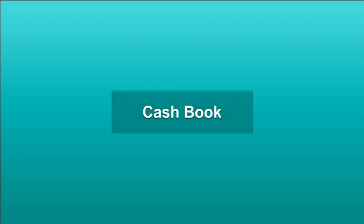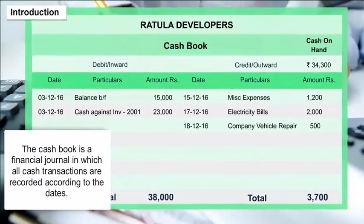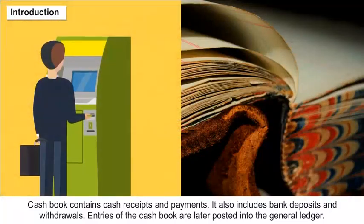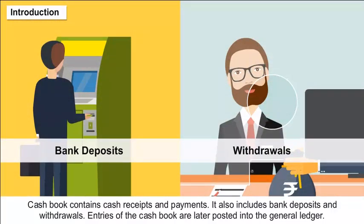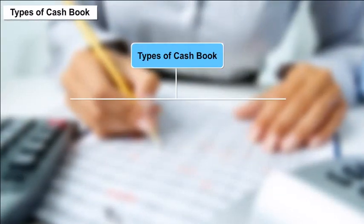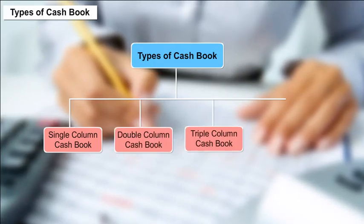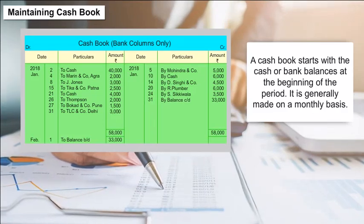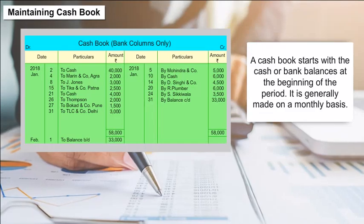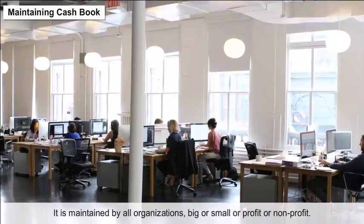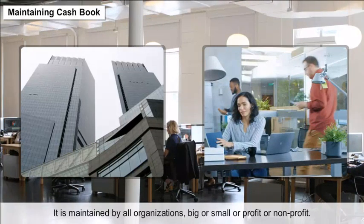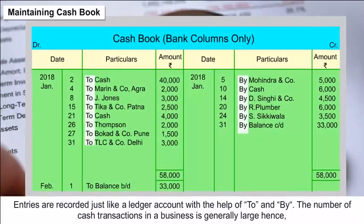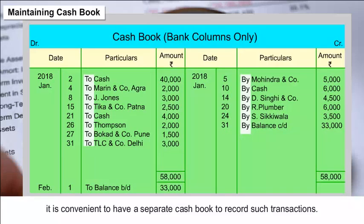Cash Book Introduction: The cash book is a financial journal in which all cash transactions are recorded according to dates. It contains cash receipts and payments, and also includes bank deposits and withdrawals. Entries of the cash book are later posted into the general ledger. Types of cash book include: single column, double column, triple column, and petty cash book. A cash book starts with the cash or bank balance at the beginning of the period and is generally made on a monthly basis. It is maintained by all organizations. Because the number of cash transactions in a business is generally large, it is convenient to have a separate cash book to record such transactions.